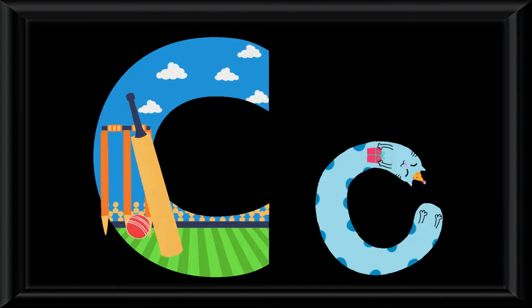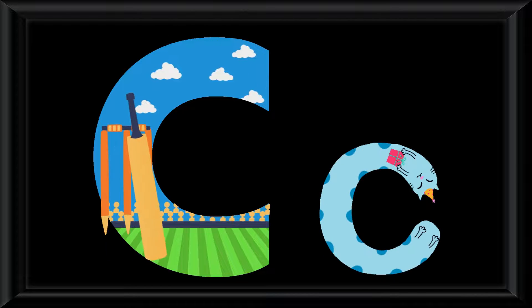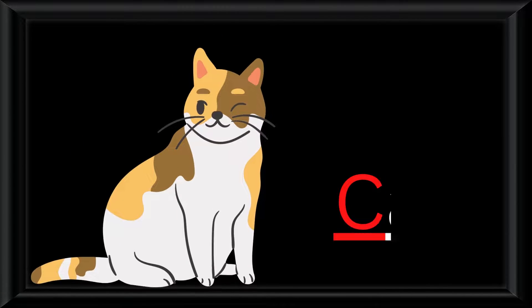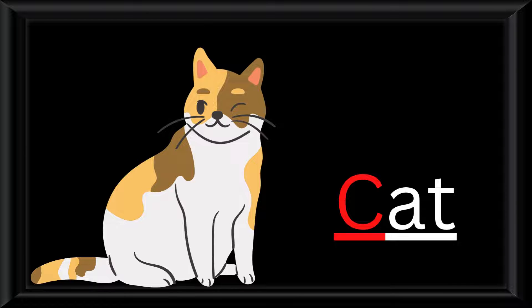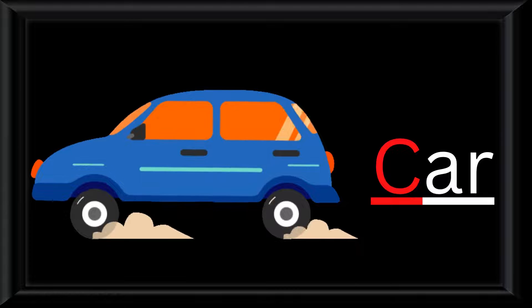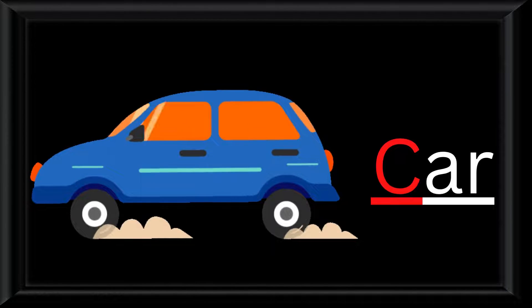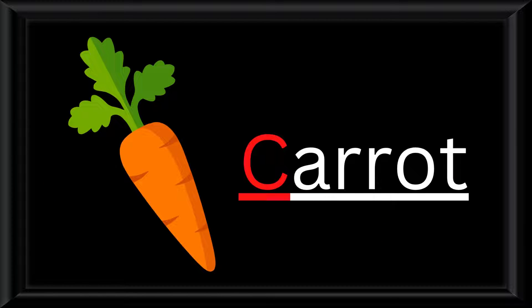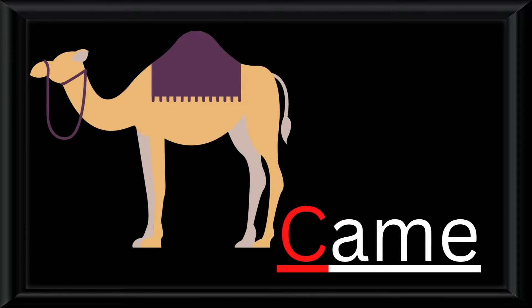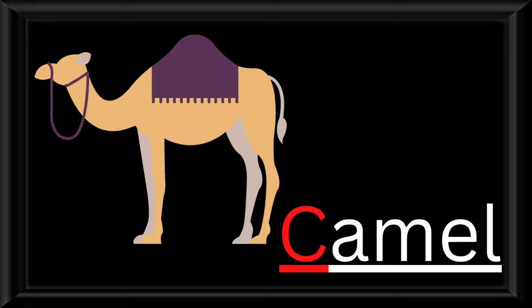The name for this letter is C. The sound it makes is K. Let's look at some words that start with the sound K. K is for cat — K, K, cat. K is for car — K, K, car. K is for camel — K, K, camel.